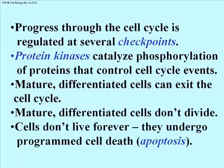Cells die and have to be replaced — they don't live forever. When they die, they undergo something called apoptosis, a term that describes programmed cell death. We know something about what controls apoptosis. A good example would be the tadpole that metamorphoses into a frog.